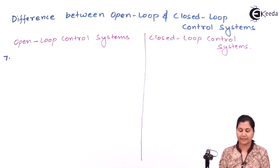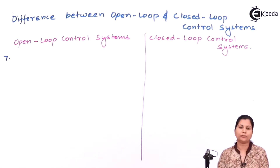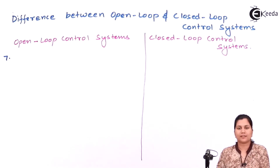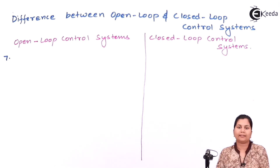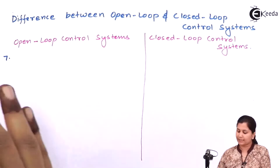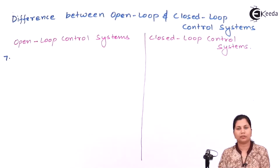The seventh difference is that the open loop control system is more sensitive to disturbances, noise, and changes in the environment. Whereas the closed loop control system is less sensitive.